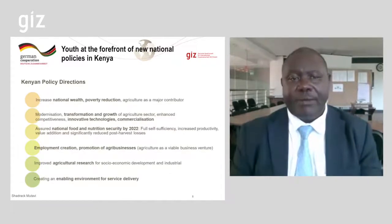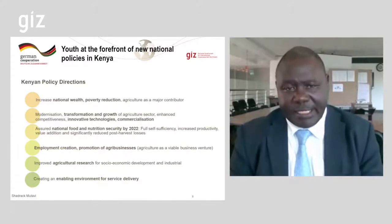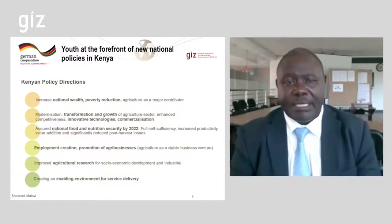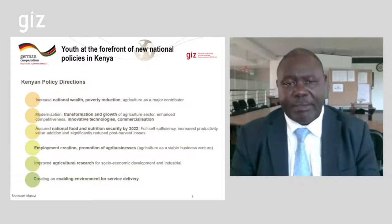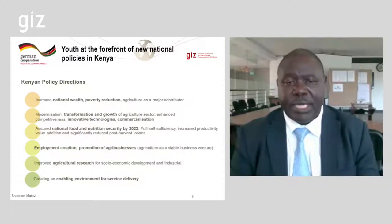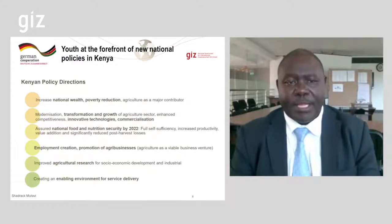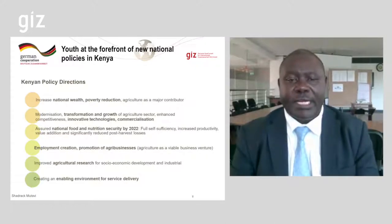The policy directions that the government has been taking in Kenya — one of them is to create wealth in the rural sector and also reduce poverty, which is a key issue affecting rural youth. Another policy direction is the transformation and commercialization of the agriculture sector using innovative technologies.